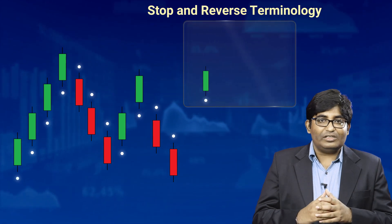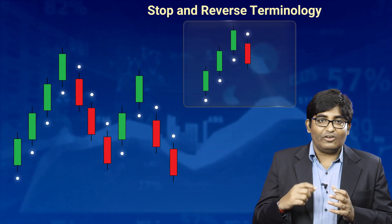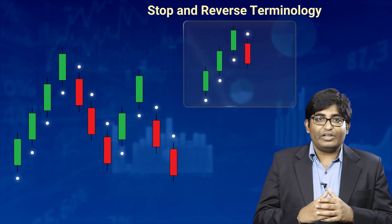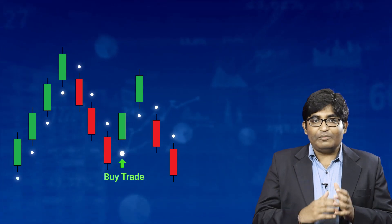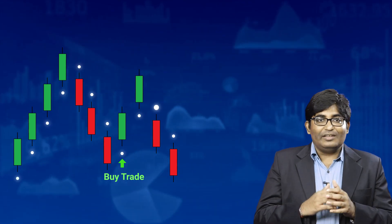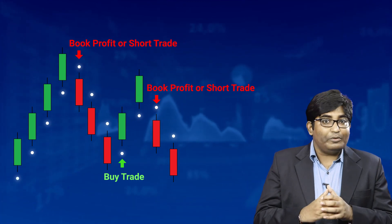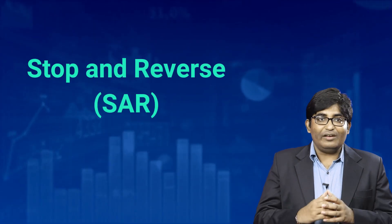The Stop and Reverse terminology comes from the fact that once the price crosses the dot — that is, the candle crosses the dot — the position of the dot reverses. Hence, theoretically, a trader should reverse his position. In the bullish case, once the dots start appearing below, when the dots go above the price, the trader should book profit in his long position and take a short position at the same time. This is where the name Stop and Reverse comes from.